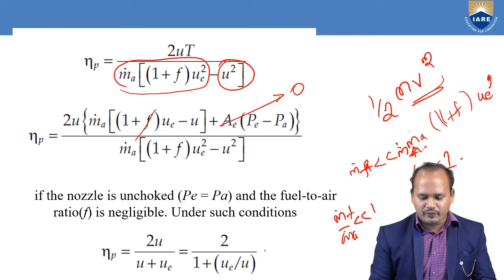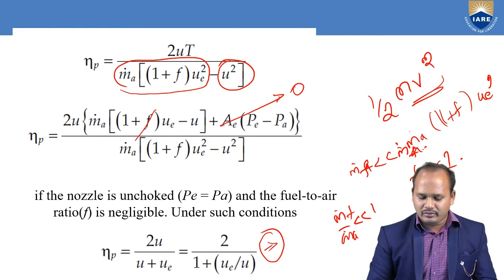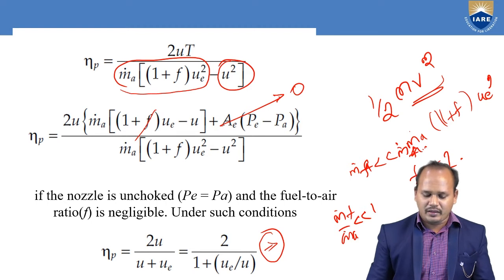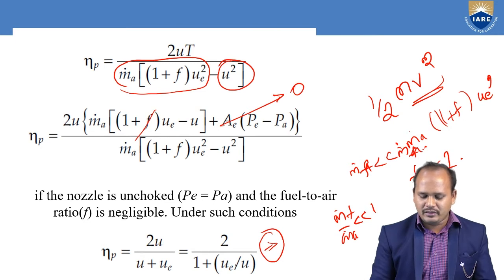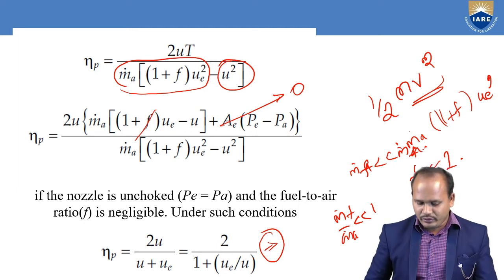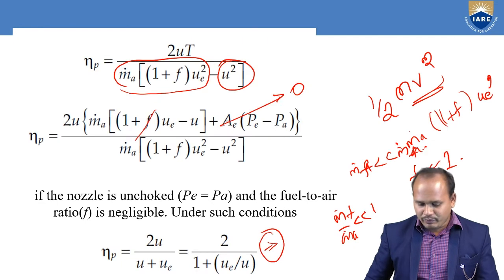Simplifying that equation, we get ηp = 2u / (u + ue), which can also be written as 2 / (1 + ue/u). This is another form of the propulsive efficiency for an ideal engine — that is, one where the nozzle is unchoked and exit pressure equals atmospheric pressure. Under that condition we obtain the equation for propulsive efficiency in terms of the velocity ratio, where ue is the exit velocity and u is the inlet velocity.